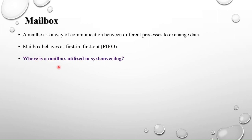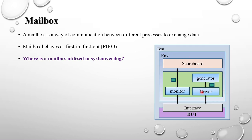Where is mailbox utilized in SystemVerilog? In our testbench architecture we have components: generator, driver, monitor, scoreboard, interface, environment, and test. The mailbox is used for communication between different processes. The generator generates randomized stimulus, and that stimulus needs to be transferred to the driver. For that we use a mailbox — from generator to driver — so that the generated stimulus is transferred through the mailbox.